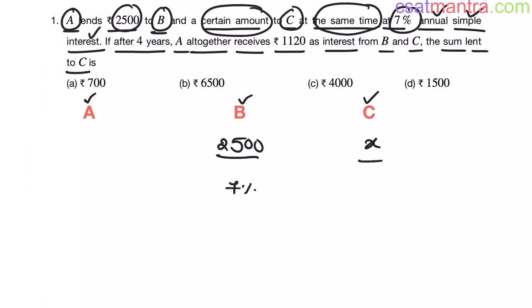So, rate is 7% for both. If after 4 years, time duration is 4 years which is same for both. A altogether receives 1120 rupees as interest from B and C. So, interest on this amount and interest on this amount is 1120 rupees. This is C's principle, rate of interest and time duration.